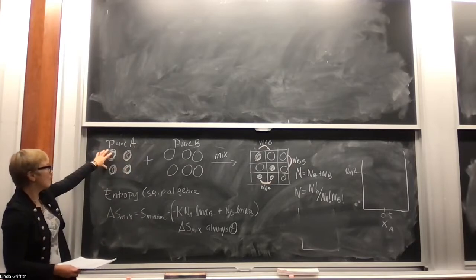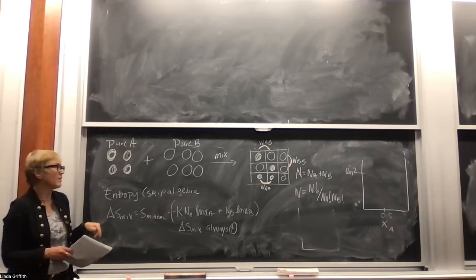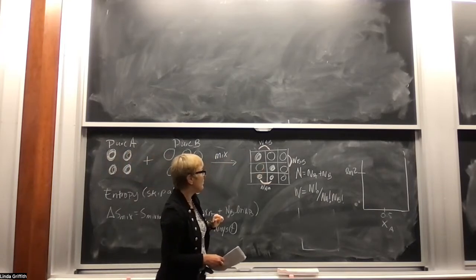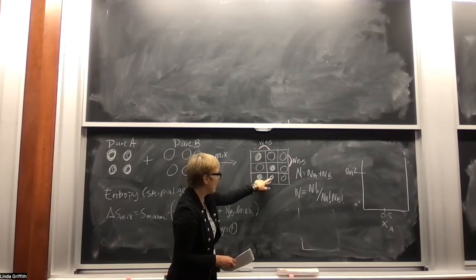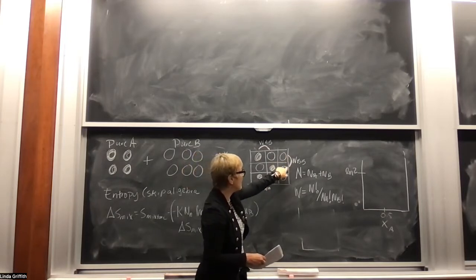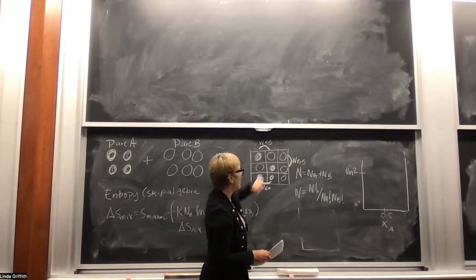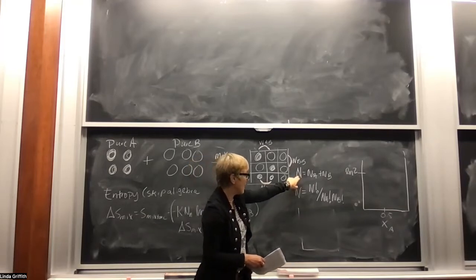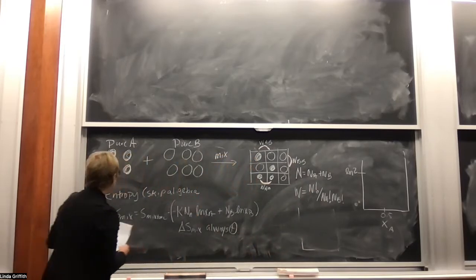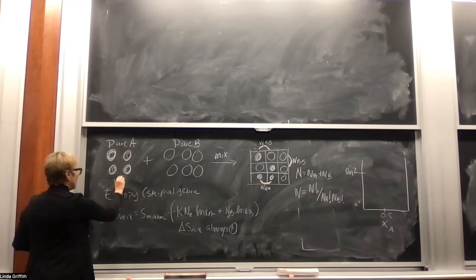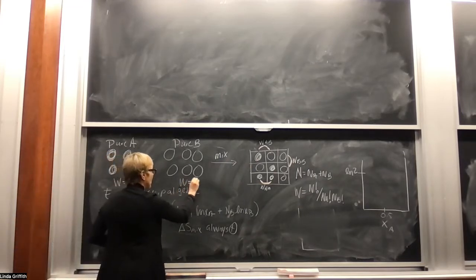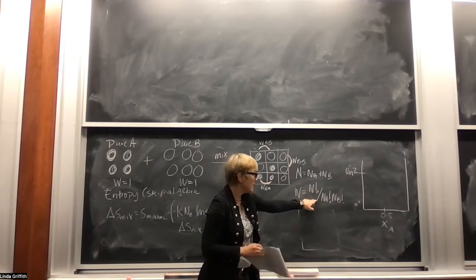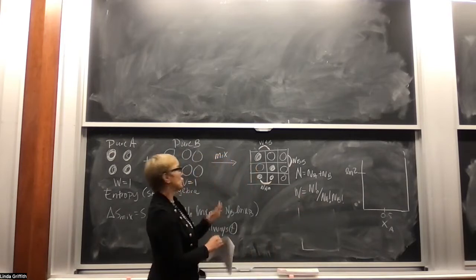We've got the lattice model: pure A on a lattice. In the condensed matter lattice, it's completely filled with identical A's or identical B's. When we mix them together, they can interact on the lattice — AA bonds, BB bonds designated w_bb, and also w_ab, the bonds between the two different species. The total number of molecules is N = N_a + N_b. For the pure state, the number of configurations W equals one.